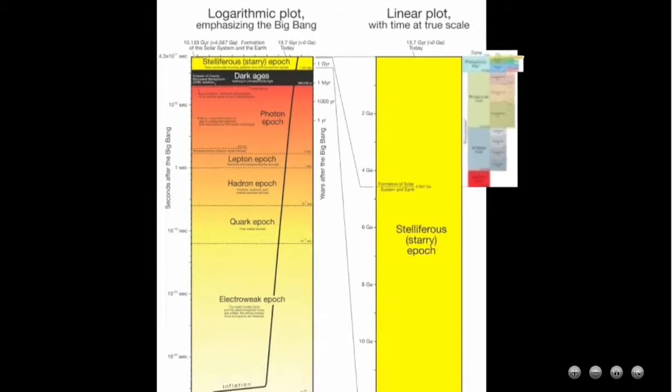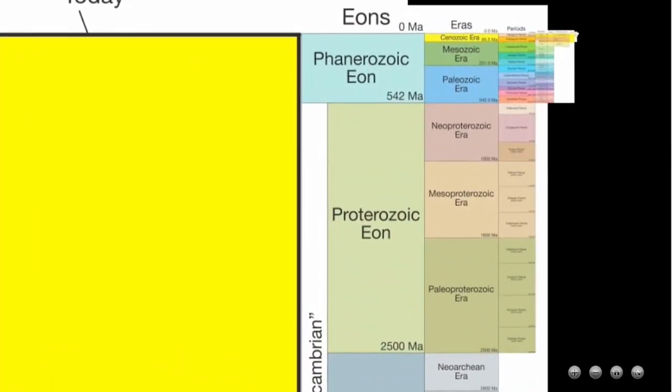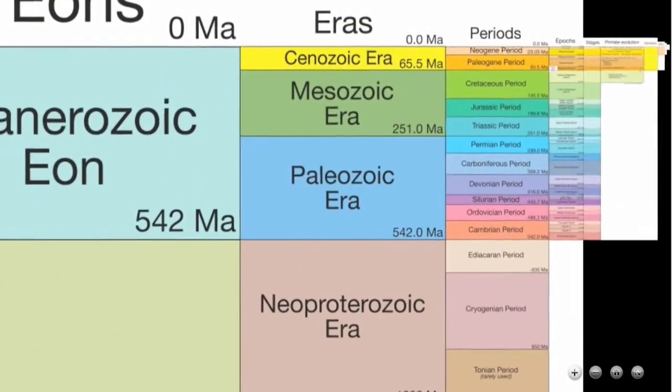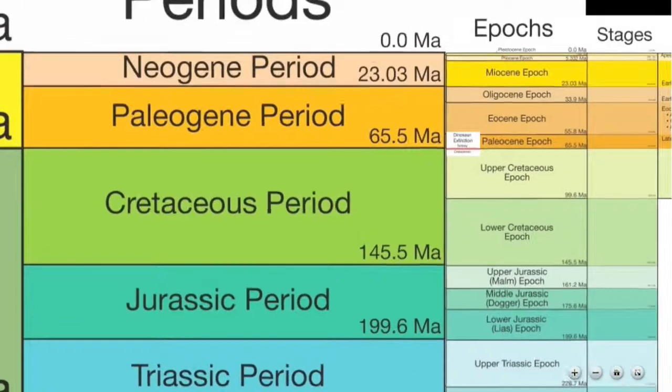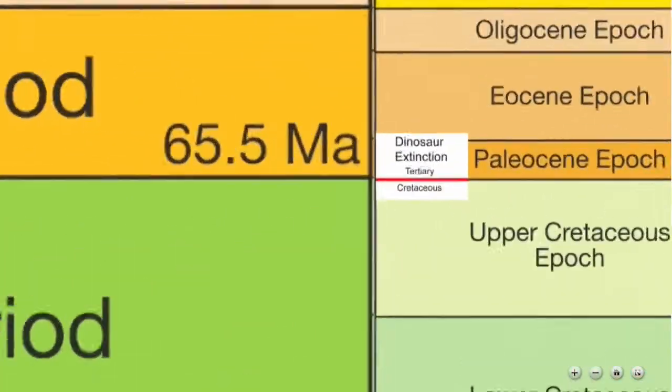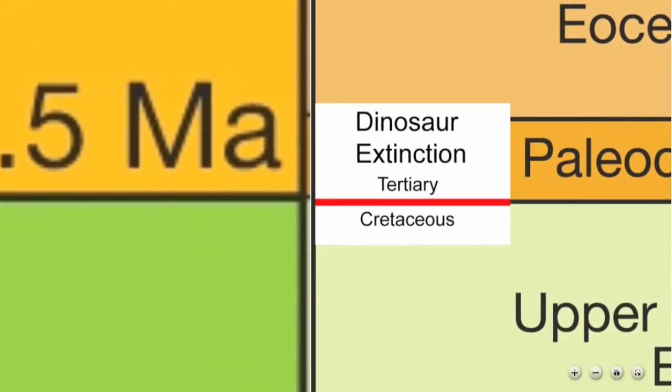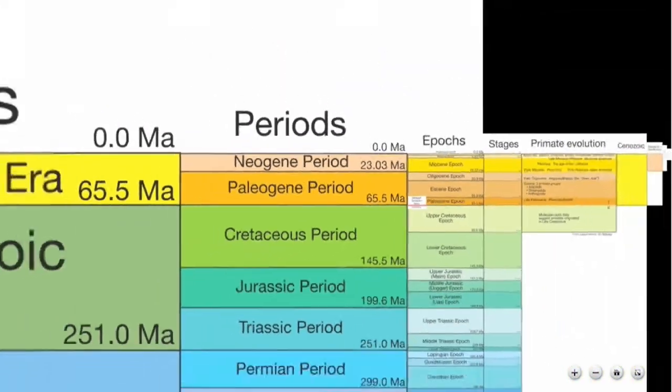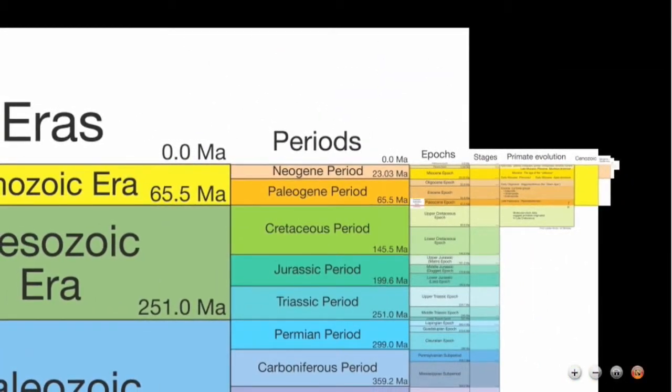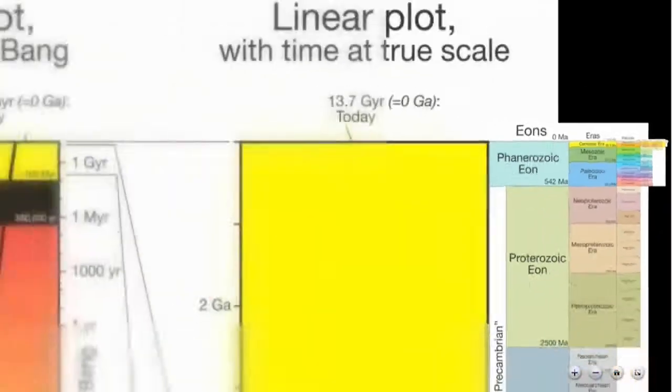These timescales describe Earth history. These are the official time divisions of geological time. We can see eons, eras, periods, and more. Here's the Cretaceous-Tertiary boundary, when the dinosaurs were wiped out. Again, ChronoZoom makes it easy to put things into perspective. We can zoom out to the Big Bang in an instant.